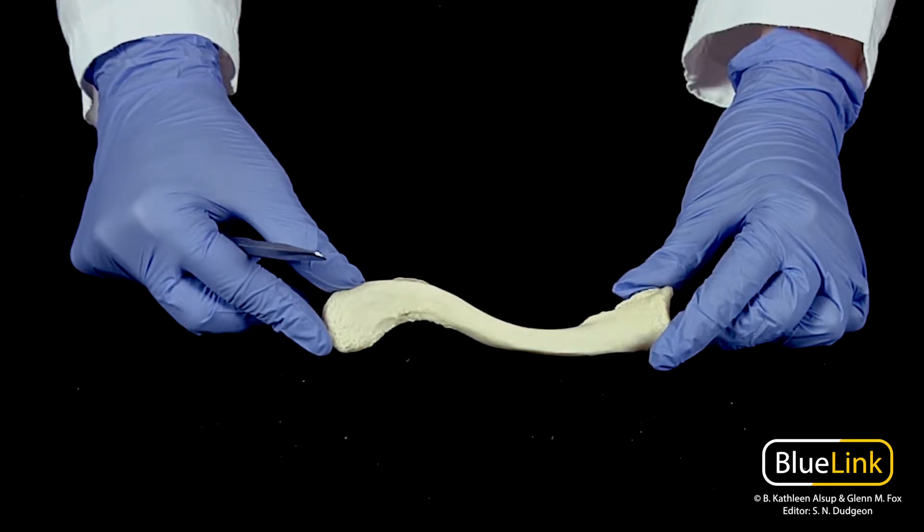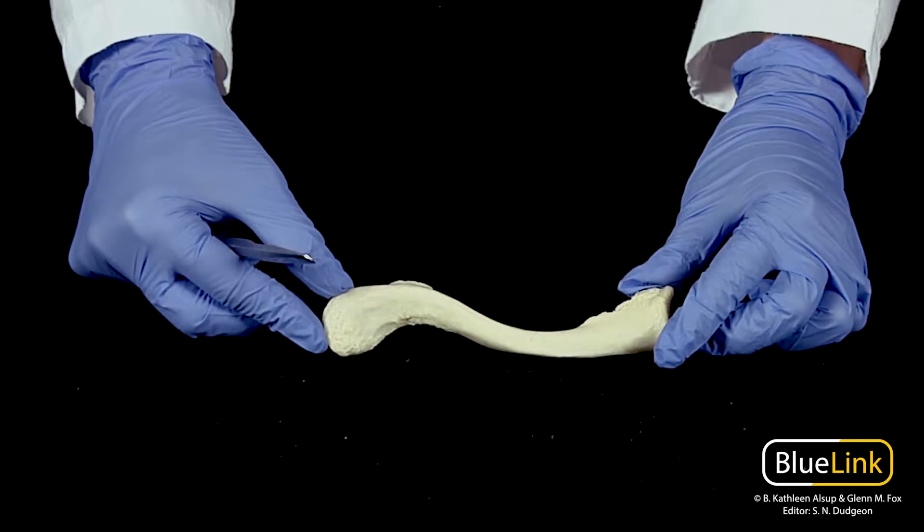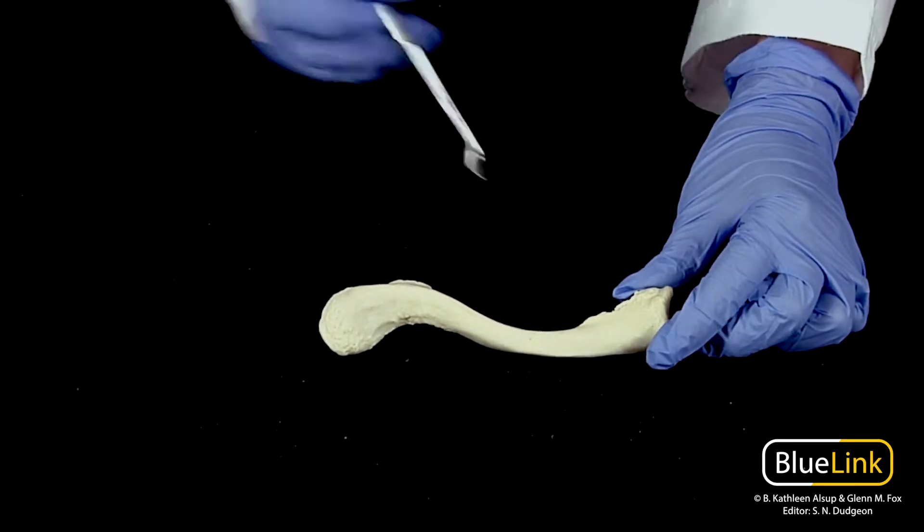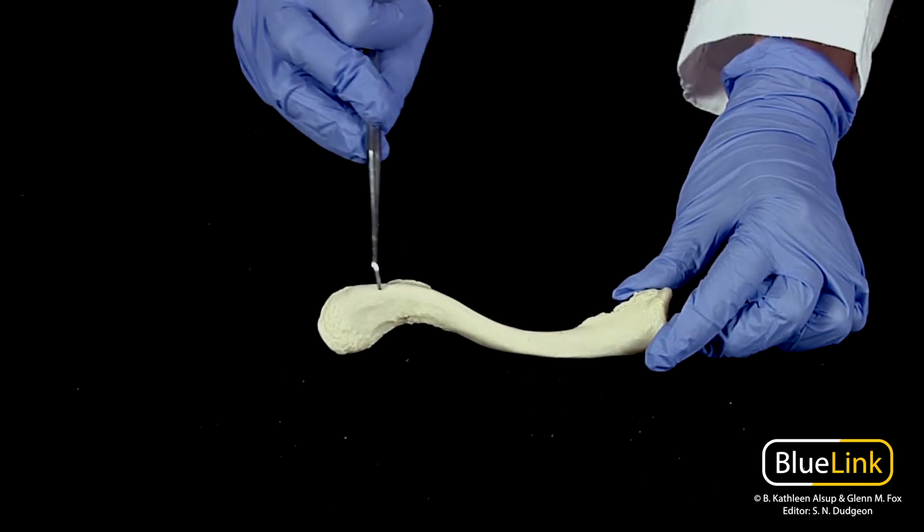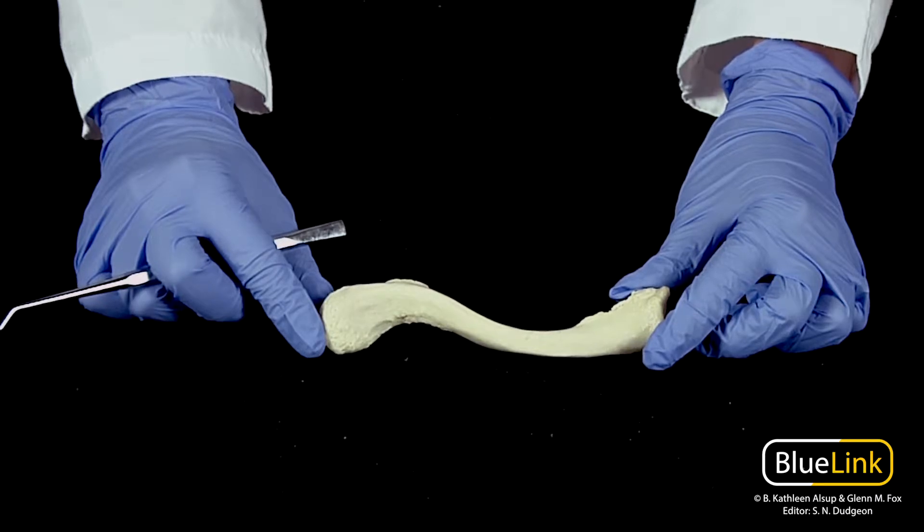It forms the strut between the anterior thorax and the upper limb, forming the important acromioclavicular joint. The S-shaped portion of the bone is referred to as the body or shaft of the clavicle.